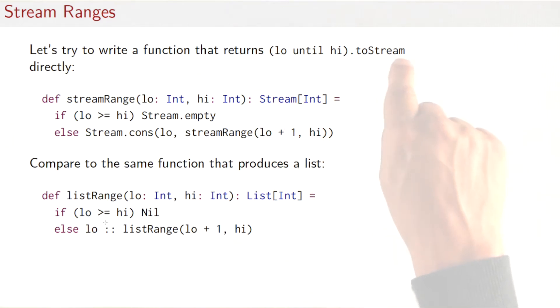Let's look at stream evaluation in a little bit more detail using ranges as an example. Instead of the usual range and then toStream expression, I've decided that I wanted to work from first principles and I wrote a streamRange function directly here. So that's the usual recursive function. If the lower bound is greater equal to higher bound, I return the empty stream. Otherwise, it's a cons of the lower bound and a recursive call of streamRange with low plus one and high. If you compare that to the function that does the same thing for lists, here's listRange. And turns out that the two functions are actually completely isomorphic. They have exactly the same structure. Only one returns a stream. The other returns a list. And the empty stream here corresponds to the nil case for the lists. And the cons case for the streams corresponds to the cons operator for the lists.